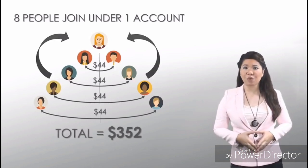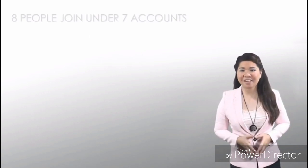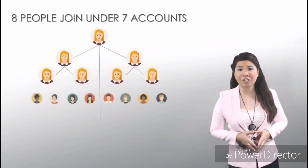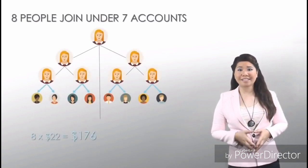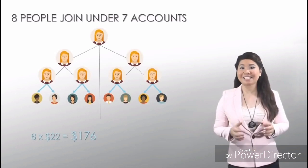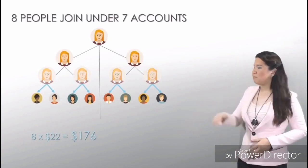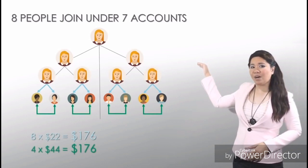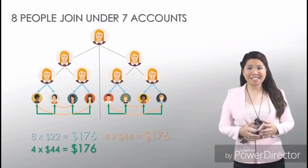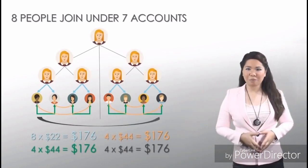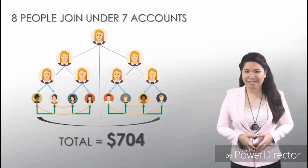So, a total of 352 US dollars. In your 7 accounts with these 8 people who joined your group, you get 176 US dollars as direct referral bonus. These middle accounts with your main account also earns 176 US dollars each. So, all in all, that would be 704 US dollars.